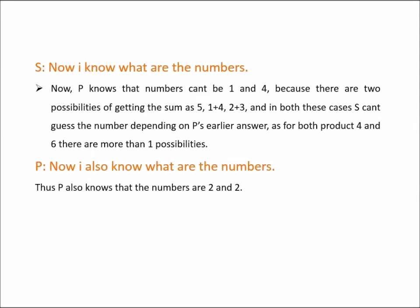As S says that I know what are the numbers, now P knows that numbers cannot be 1 and 4, because there are two possibilities of getting the sum as 5, that is 1 plus 4 and 2 plus 3.